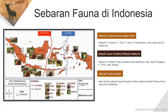Yang kedua ada wilayah fauna peralihan, daerahnya meliputi Sulawesi, Nusa Tenggara, Pulau Timor, dan Kepulauan Maluku. Jenis hewannya ada anoa, babi rusa, dan yang khas itu ada komodo sebagai endemiknya. Yang lainnya ada tarsius, rangkong, kakak tua, dan berbagai jenis burung lainnya.